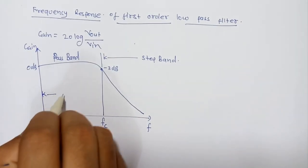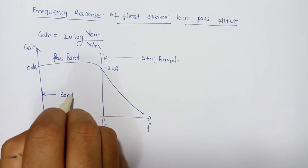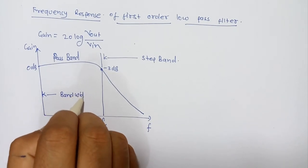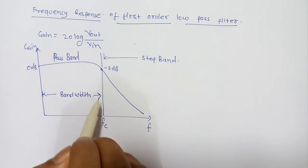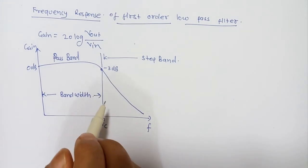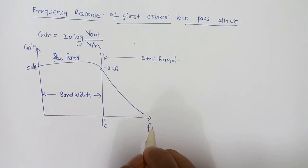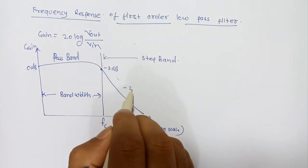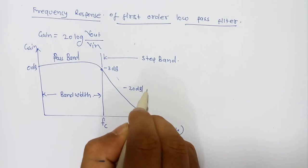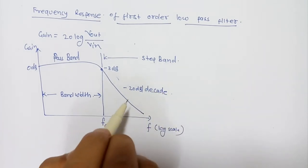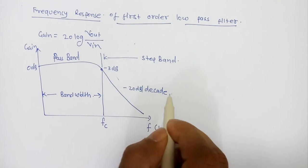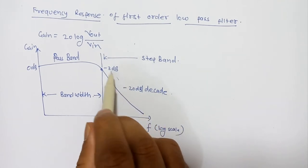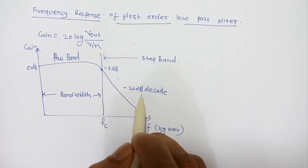Overall, this passband is also known as the bandwidth of the filter up to this point. This is Fc on the log scale and the roll-off will be 20 dB per decade for a single pole filter. The 20 dB per decade means the gain will be decreasing by 20 dB per 10 times the frequency.